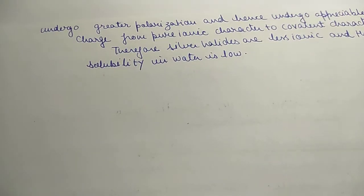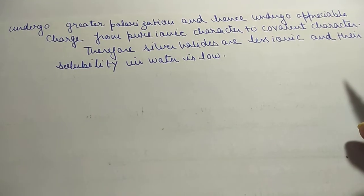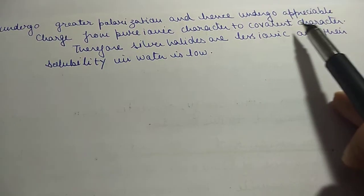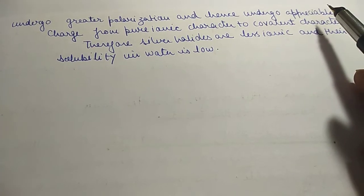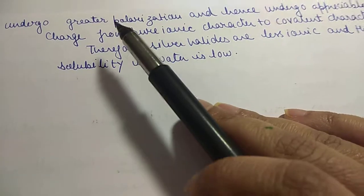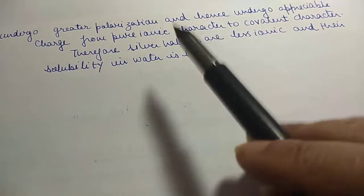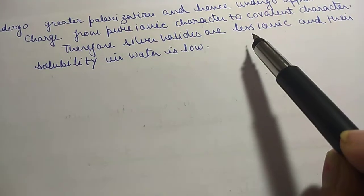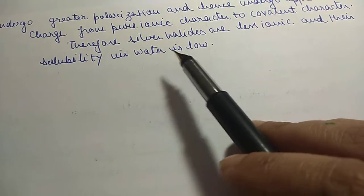Due to greater effective nuclear charge, Ag+ undergoes greater polarization and the character changes from pure ionic to covalent character. Therefore silver halides are less ionic — covalent properties arise, and that is why their solubility in water is low. In the next lecture we will study what characteristics arise with covalent character.